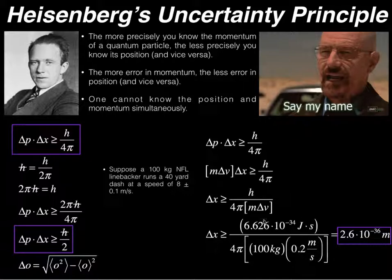And when you actually calculate this, the uncertainty in his position has to be greater than or equal to 2.6 times 10 to the minus 36 meters.